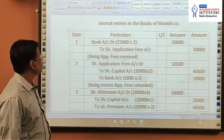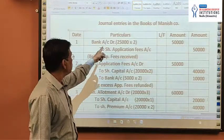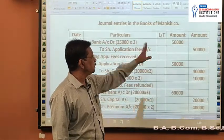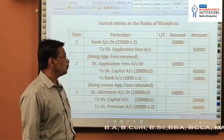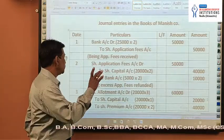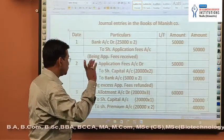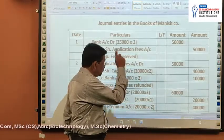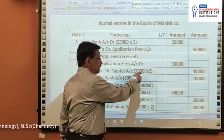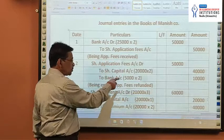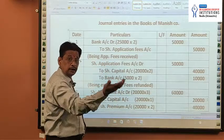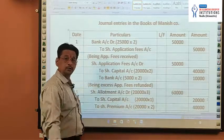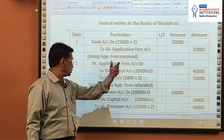So journal entries. First, applications are issued: Bank Account debit — 25,000 applications issued, on each Rs.2, Rs.50,000 received. Credit Share Application Fee Account Rs.50,000, being application fee received. Next, Share Application Fee Account debit Rs.50,000. Credit Share Capital Account — company wants to issue 20,000 shares, so 20,000 multiplied by 2 = Rs.40,000 transferred to share capital. Excess application rejected: credit Bank Account 5,000 multiplied by 2 = Rs.10,000, being excess application fee refunded.